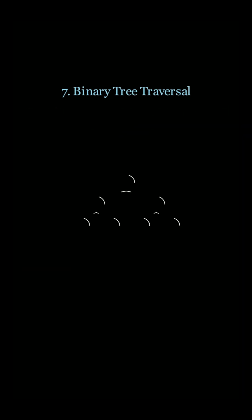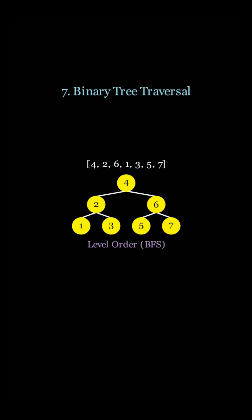Now let's take a look at level by level using BFS. First, we're going to scan 4, then 2 and 6, and then finally 1, 3, 5, and 7 level by level.